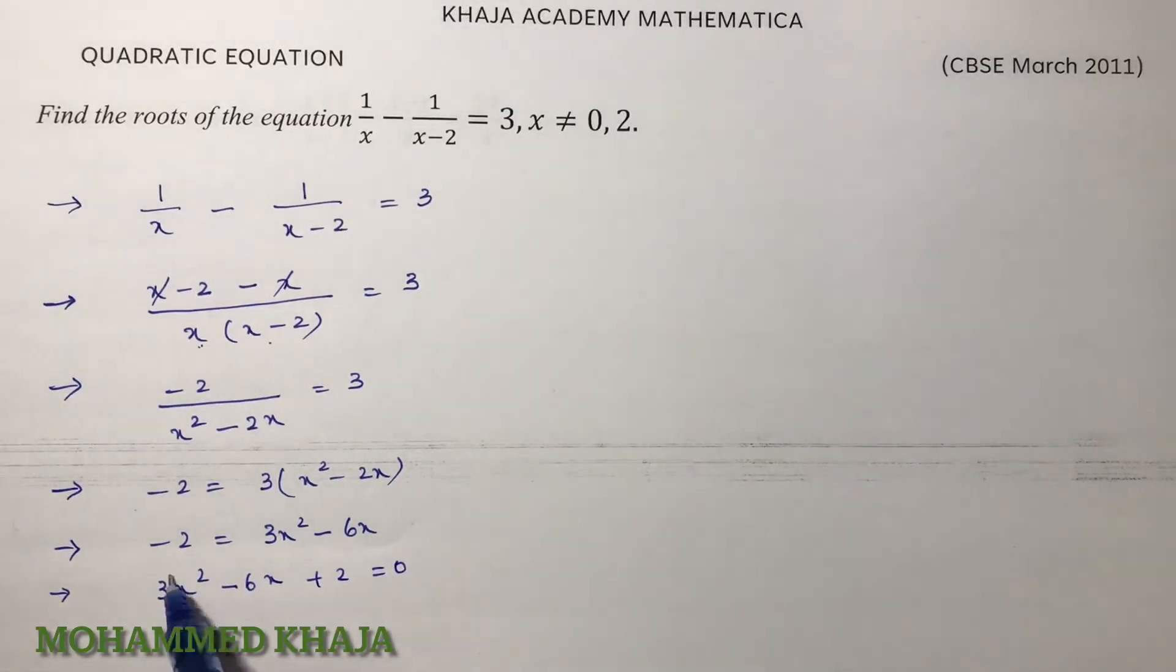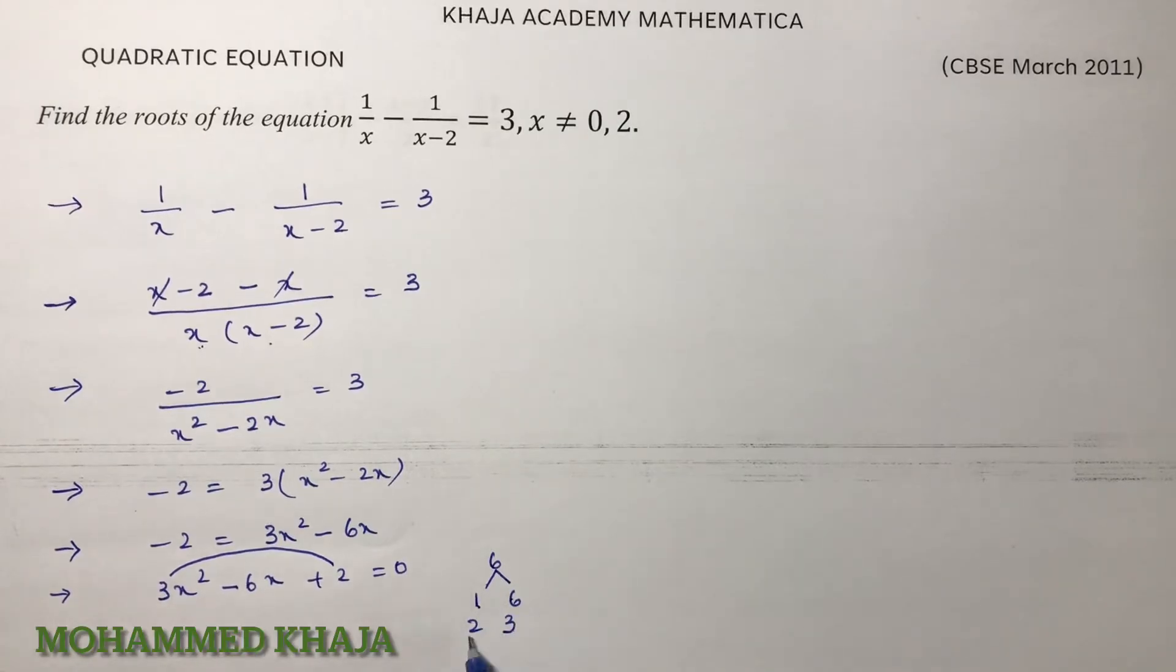Now here to factorize, 3 × 2 which is 6. 6 factors: 1 × 6, 2 × 3. With the help of 1, 6, 2, 3 you will not be able to split the middle term. 2 and 3, if you add you'll get 7, if you subtract you'll get 5, but I need 6. So here it is not possible to factorize.